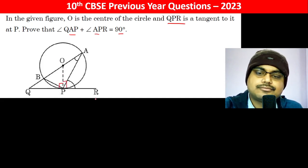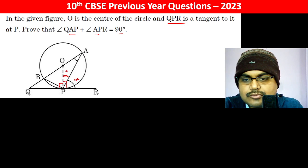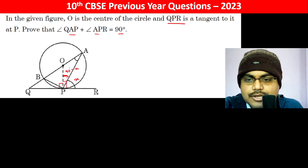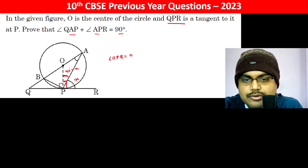Let angle APR be X. Since angle OPR equals 90 degrees, this other angle becomes 90 degrees minus X. Therefore, if angle APR is X, then angle APO will be 90 degrees minus X.